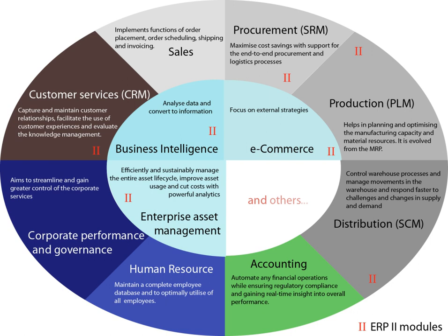ERP provides an integrated and continuously updated view of core business processes using common databases maintained by a database management system. ERP systems track business resources—cash, raw materials, production capacity—and the status of business commitments, orders, purchase orders, and payroll.